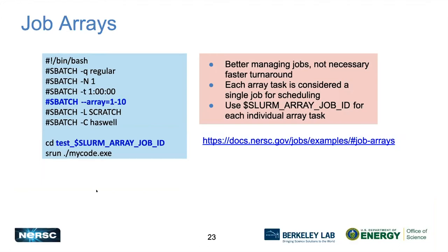Job arrays allow you to submit many similar jobs as a single array rather than submitting 10 jobs individually. A convenient environment variable SLURM_ARRAY_JOB_ID lets you manage sub-jobs. You can prepare input in subdirectories for each task. When monitoring or managing, you can cancel all of them together. However, SLURM treats each array element as an independent job for scheduling purposes — submitting a 10-job array results in 10 individually scheduled jobs.